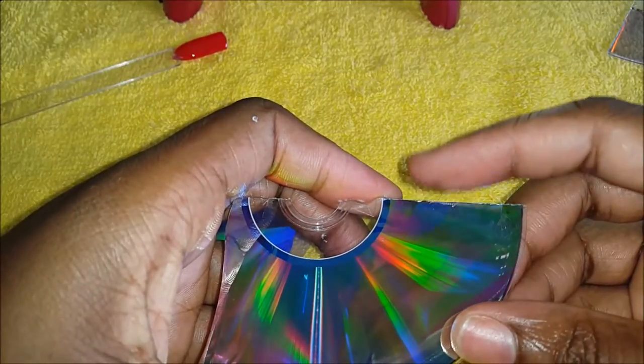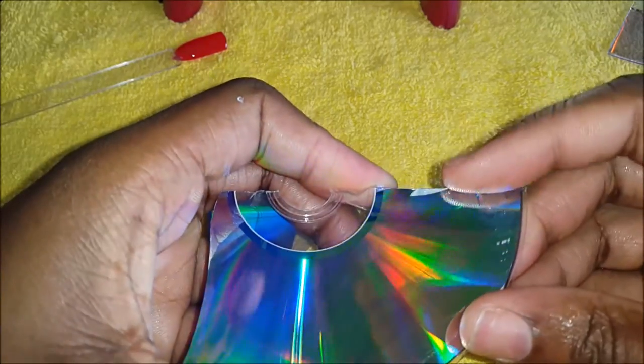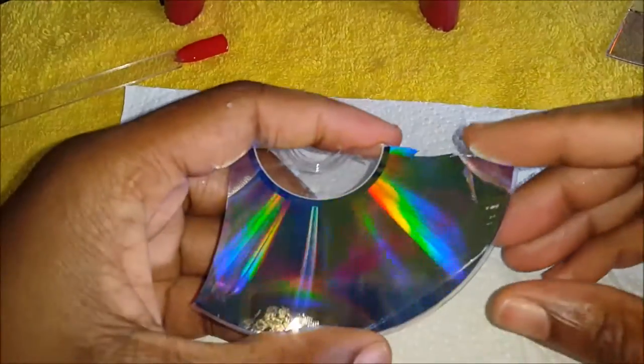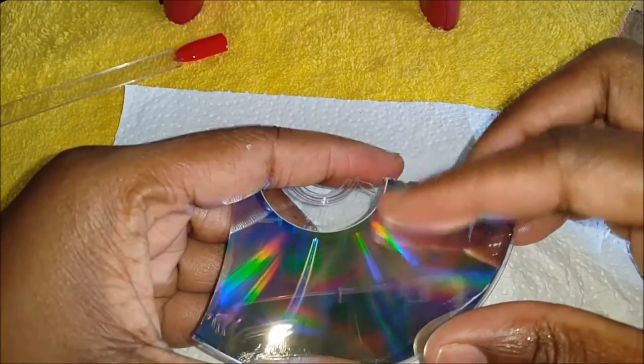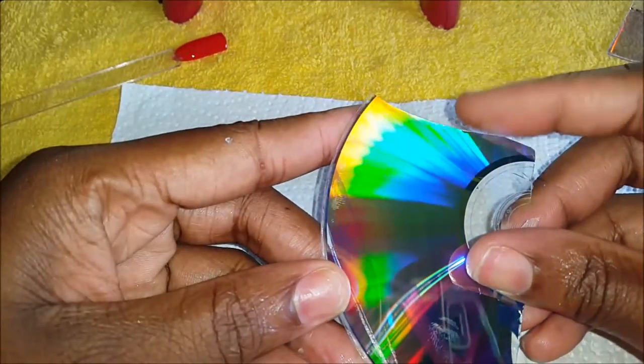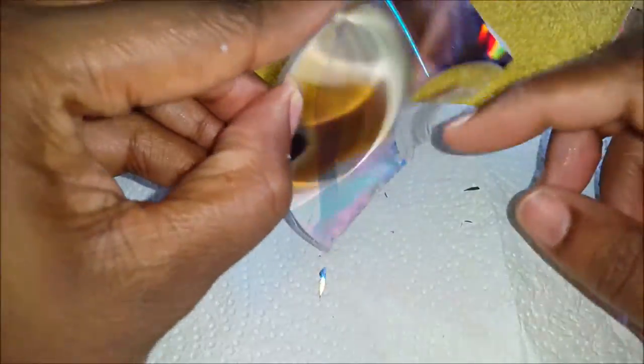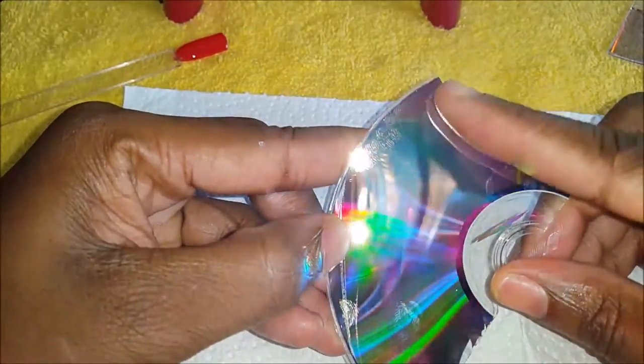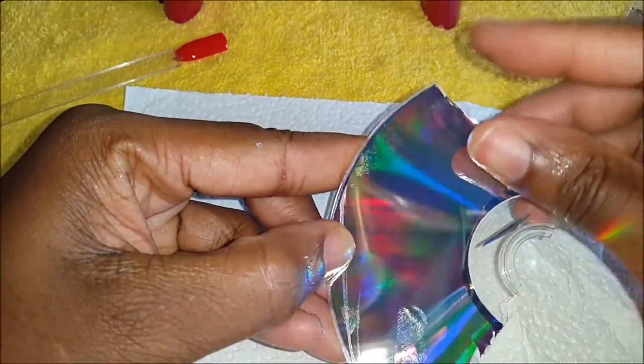You're just going to take your time and do it like this. You're going to use the thing that you see peeling off the CD, this top layer you're going to use it. As you can see, small pieces are coming off.